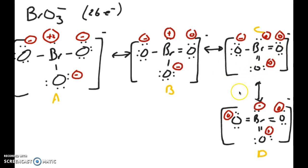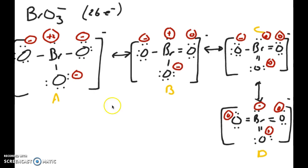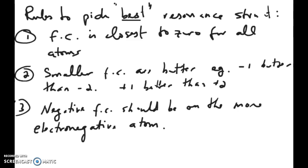When we have these types of resonance structures, usually one of them is more likely to be observed in experimental measurements compared to others. Our goal today is to figure out, given four non-equivalent resonance structures, which one is closest to the experimental structure. I'll use the term 'best' to refer to that experimentally observed structure.